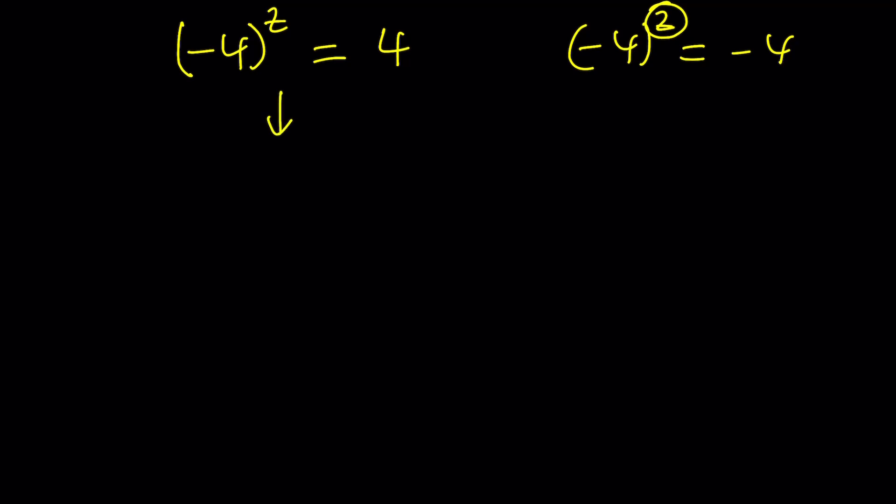Now I'm going to write two things. First, negative 4 can be written as 4 times negative 1. And in the complex world, I can write the negative 1 as e to the power pi i.